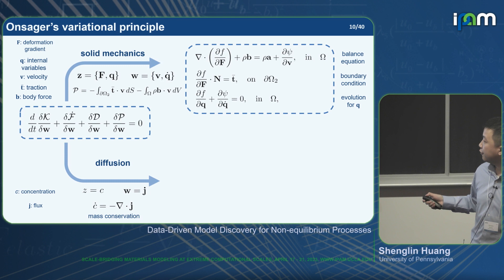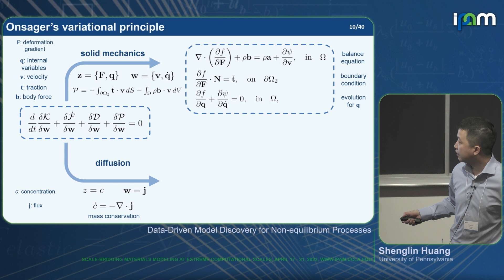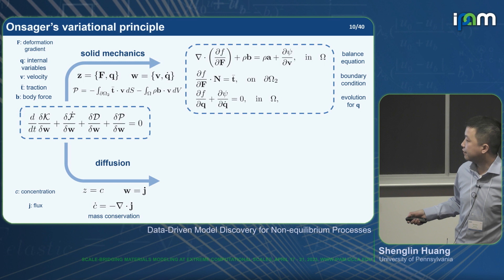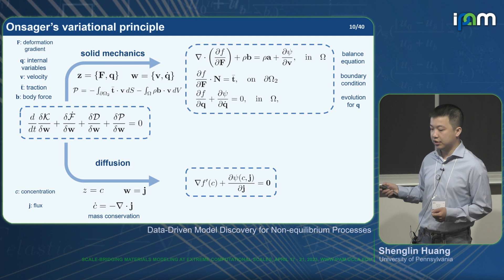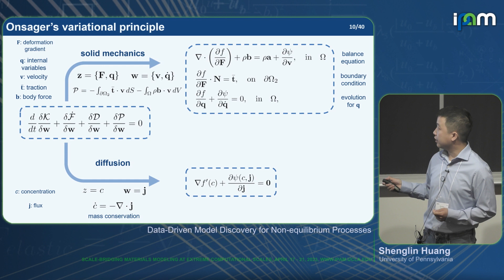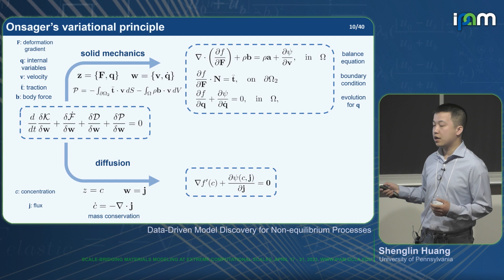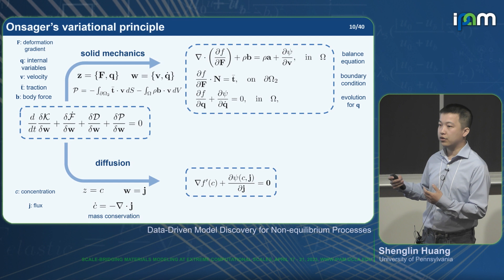For a diffusion process, if concentration describes the state and flux describes the process, and the system satisfies mass conservation, we also obtain a governing equation describing diffusion. From the variational principle, we obtain evolution equations written in terms of free energy and dissipation potentials. For a given system, if we know these potentials along with initial and boundary conditions, we can solve the equations to know how the system evolves.